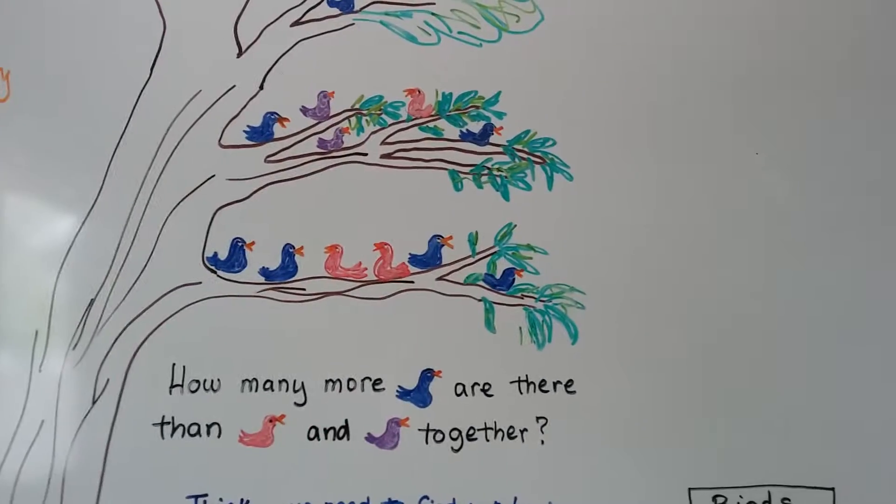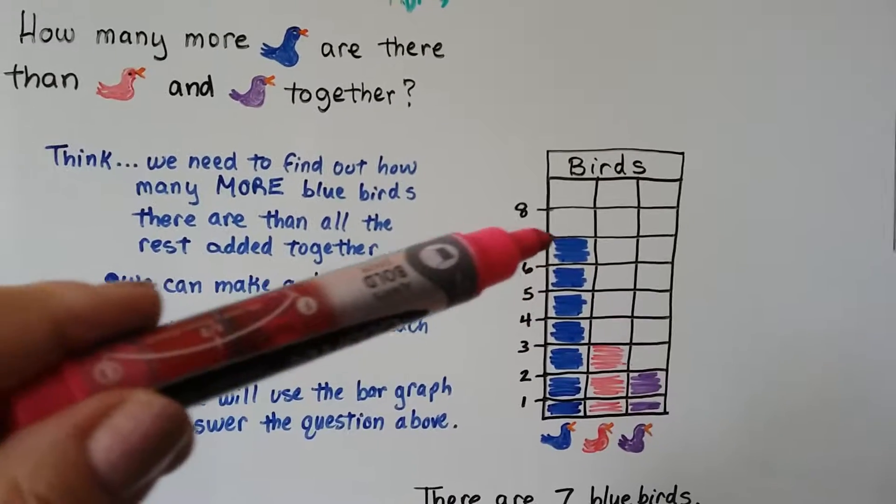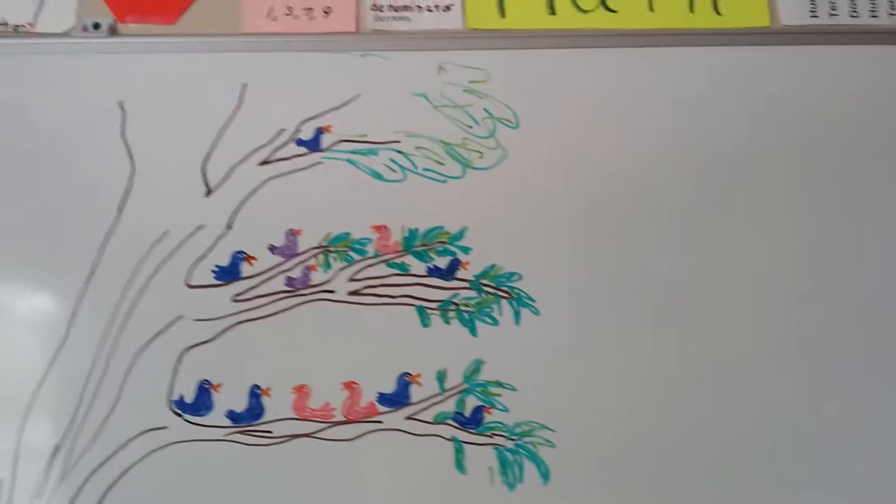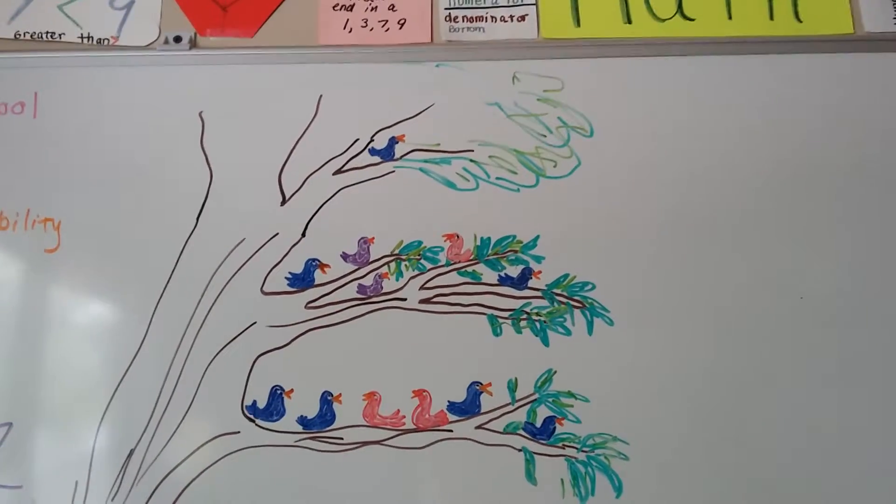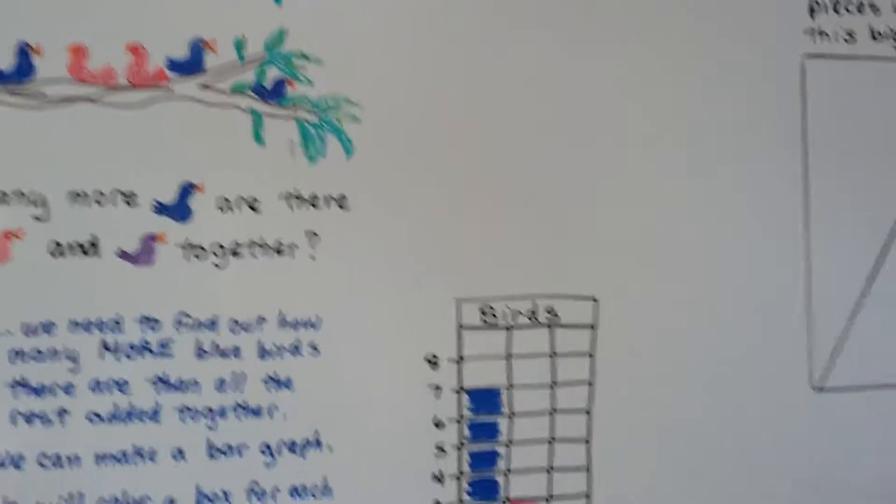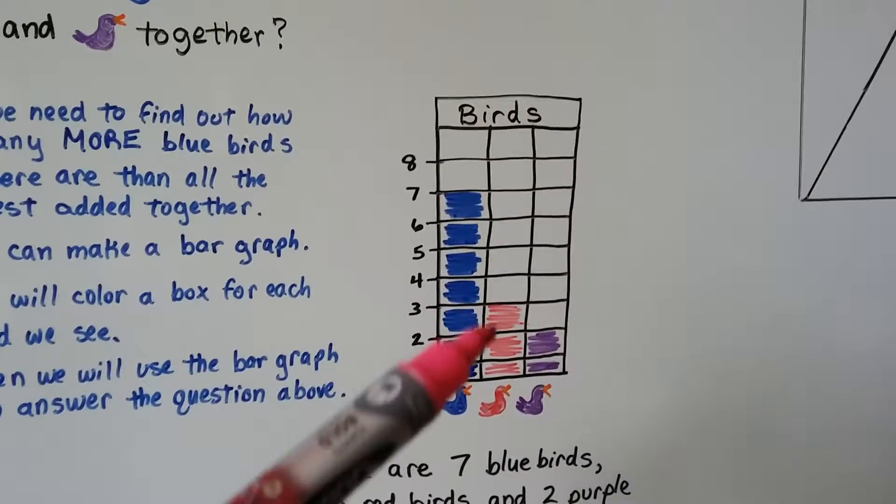These don't count because they're in the question. So we fill in seven boxes. See, we fill it up to the seven. So there's seven bluebirds. So let's count the red ones. How many red birds are in the tree? I count one, two, three. So we fill in three boxes for red birds. See, it's filled up to the three. One, two, three.